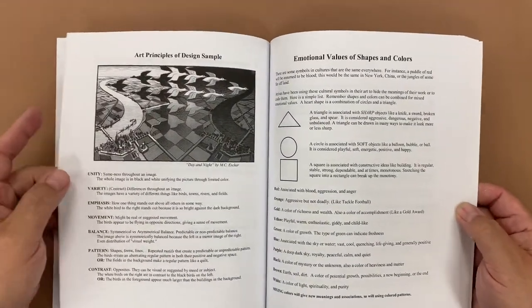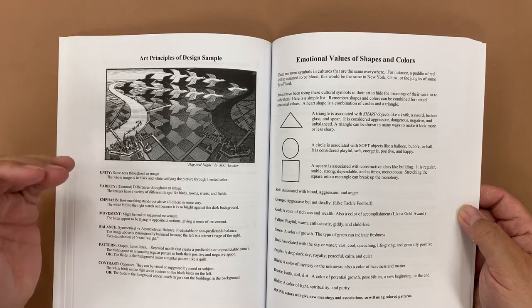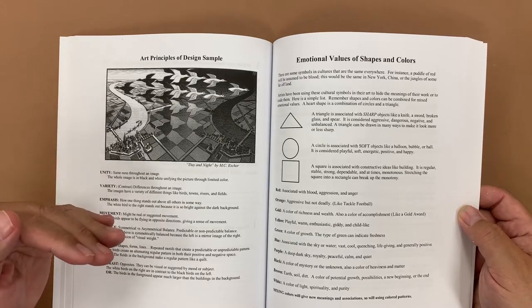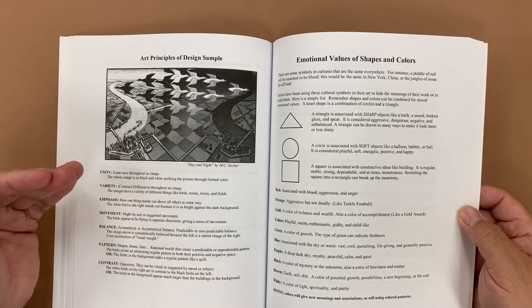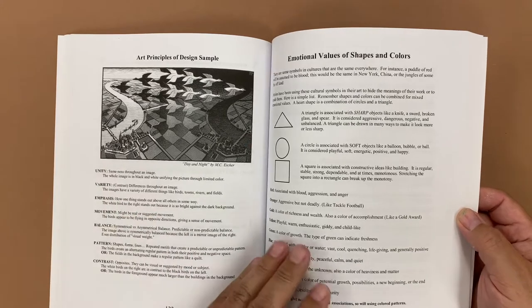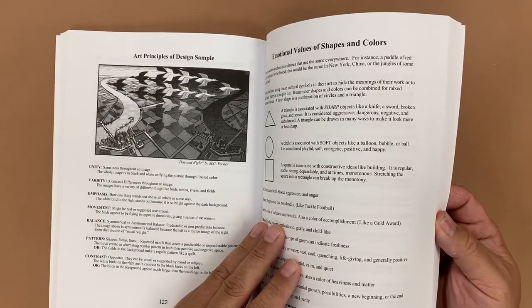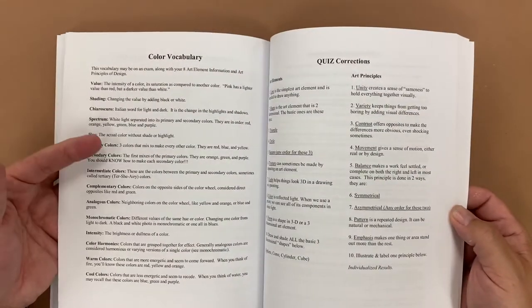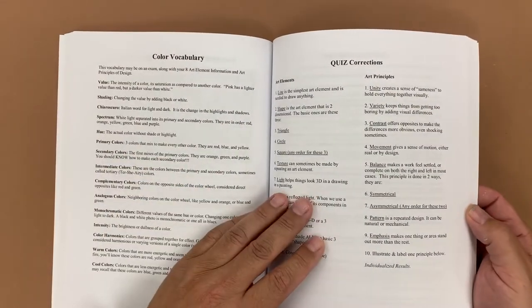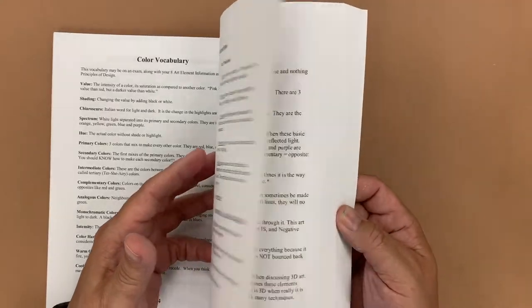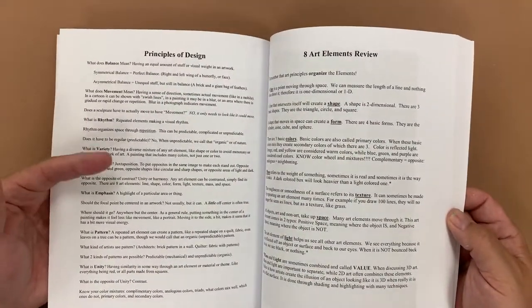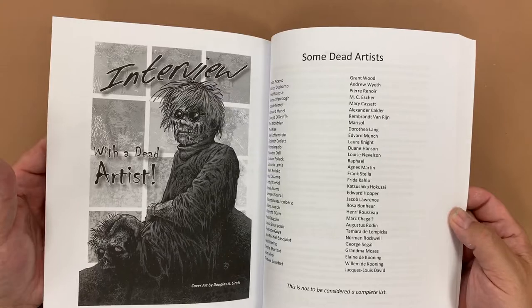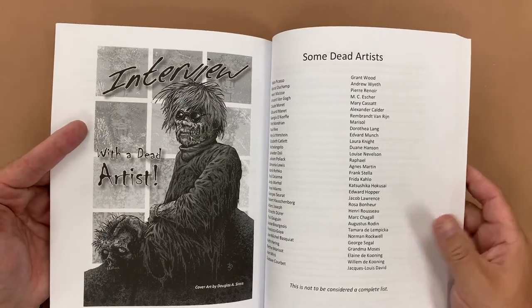And then in the back for my 504 and IEP students, I actually have the definition spelled out for the worksheets that appear earlier in the book. So this is helpful if you do have a student who needs some additional help or they're not quite understanding what is required. This can be helpful. The answers to the quizzes that are forward in the book, principles of design, the art elements, and then we have some research topics that they can do.